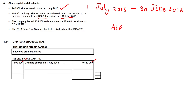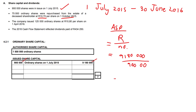How do we get the ASP? It's going to be your rand monetary value over the number of shares in issue. So that's 9,180,000 divided by 900,000 to get our ASP of R10.20. So 75,000 shares were repurchased at our average share price of R10.20, giving us 75,000 times R10.20 equals 765,000.